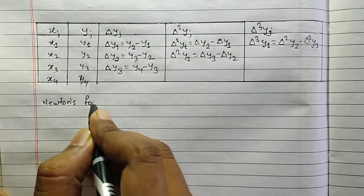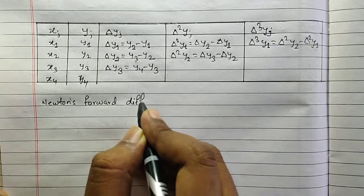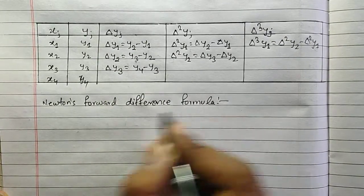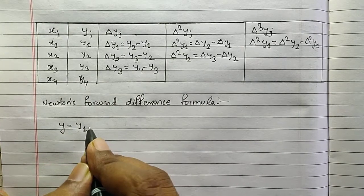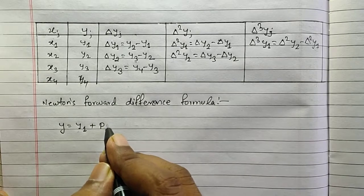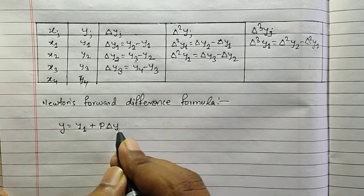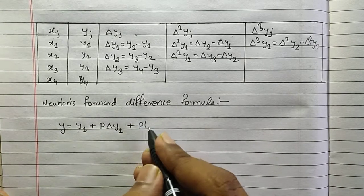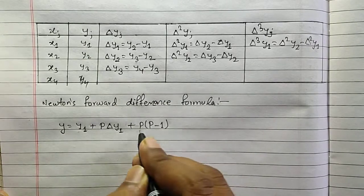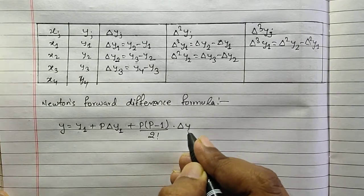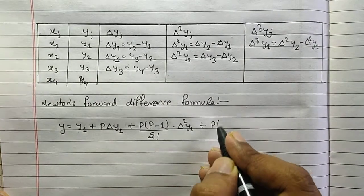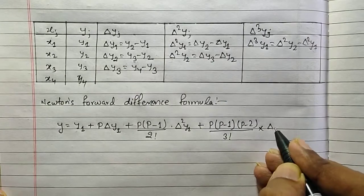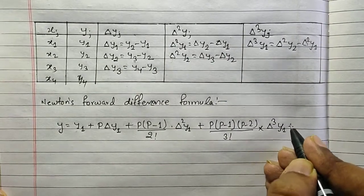Newton's Forward Difference Formula is given as: y equals y1 plus p times delta y1, plus p times (p minus 1) divided by 2 factorial times delta squared y1, plus p times (p minus 1) times (p minus 2) divided by 3 factorial times delta cubed y1, and so on.